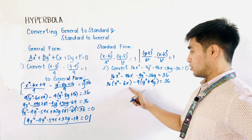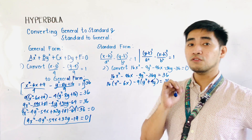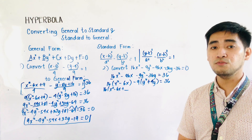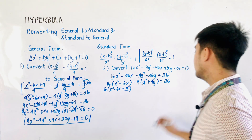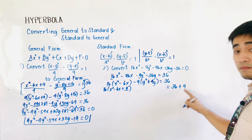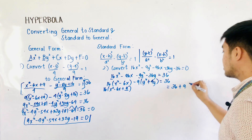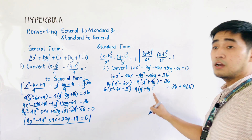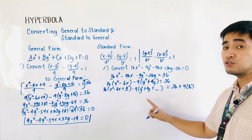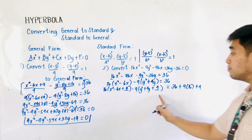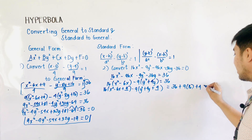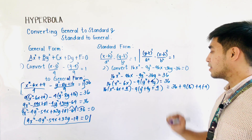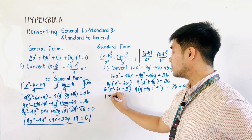Now we complete the square. For x² − 6x, take (−6/2)² = 9 and add it inside: 16(x² − 6x + 9). Add 16×9 = 144 to the right side. For y² + 4y, take (4/2)² = 4 and add it inside: −9(y² + 4y + 4). Add −9×4 = −36 to the right side. Factoring, this gives 16(x−3)² − 9(y+2)².